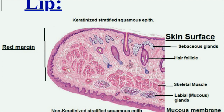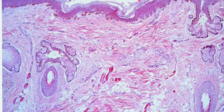In between the two surfaces we have the skeletal muscle orbicularis oris. At the junction between the two surfaces we have the red margin, or vermilion. This red line is characterized by marked corrugation or folding of the basement membrane, and it is formed of very thin, transparent skin devoid of hair follicles, sebaceous glands, and sweat glands.